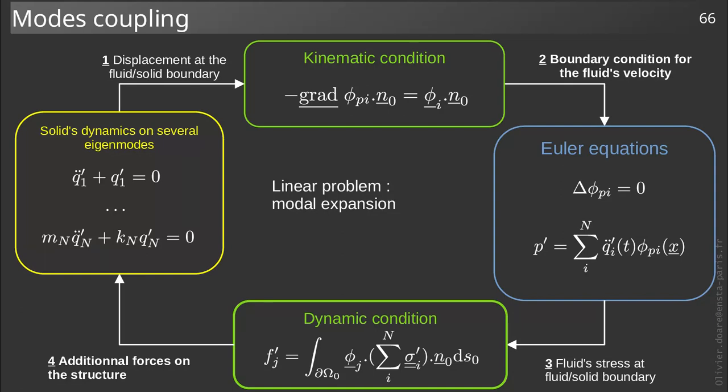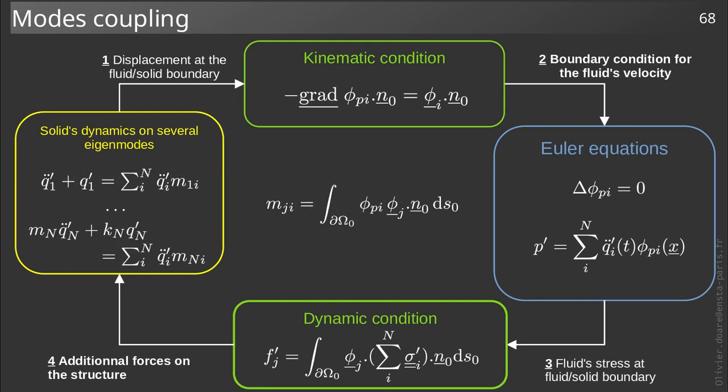These modal forces appear in the right-hand side of the oscillator equations. And as we have already shown, in this inviscid case, the stress tensor depends only on the pressure, and each modal contribution I is proportional to the acceleration, that is, q_i'' divided twice in time. We thus find inertial coupling on the right-hand side involving the set of modal accelerations and coupling coefficients whose expression is given here. The coefficient m_ji is the integral on the surface of phi_pi times phi_j scalar N.